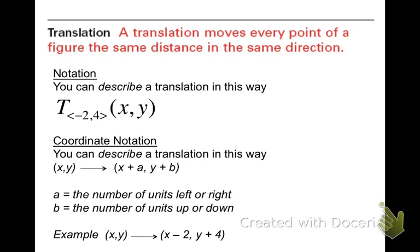We can use a capital T with some subscript, and the subscript, the first thing in the subscript, in this case the negative 2, tells you which way to move your x-coordinates of your points, and the second thing in the subscript tells you which way to move your y-coordinates.